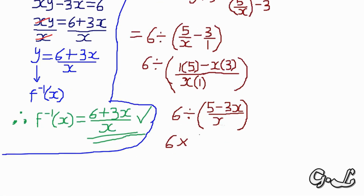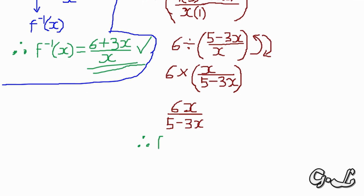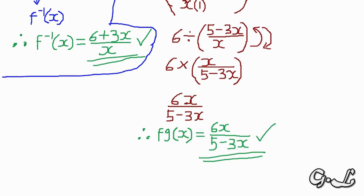According to the rules of dividing fractions, the numerator and denominator of the right-hand fraction swap. So fg(x) = 6 × x/(5 − 3x) = 6x/(5 − 3x). Therefore fg(x) = 6x/(5 − 3x). That is how you earn marks in an exam room.